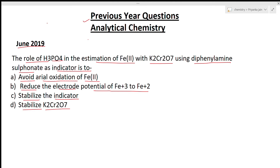We are watching the titration of Fe²⁺ with K₂Cr₂O₇ where diphenylamine sulfonate is being used as the indicator. We have to find out the role of H₃PO₄ — why we are adding it. To understand this, we should know the basic concept behind this titration.